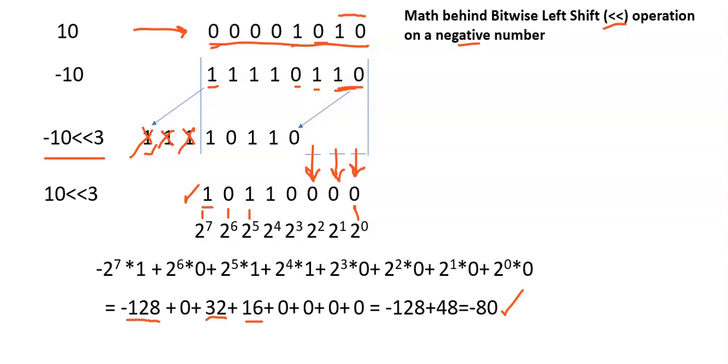Here, whenever 10 is shifted to left hand side, minus 10 for the first time becomes minus 20. For the second time, it becomes minus 40. And for the third time, it becomes minus 80. In this fashion, the bitwise left shift operation works on positive numbers as well as negative numbers.